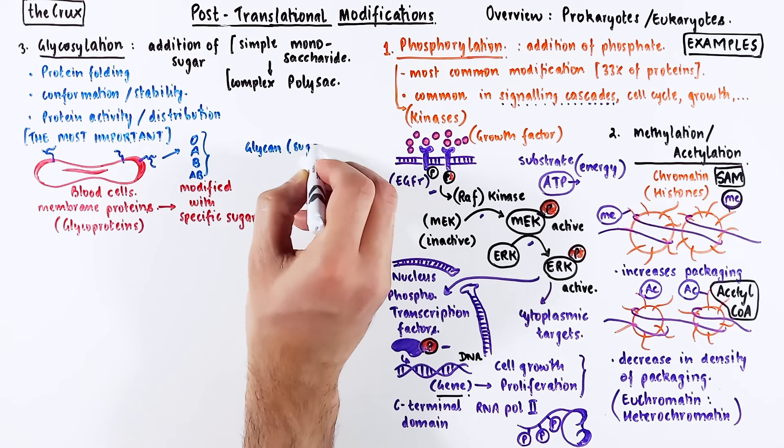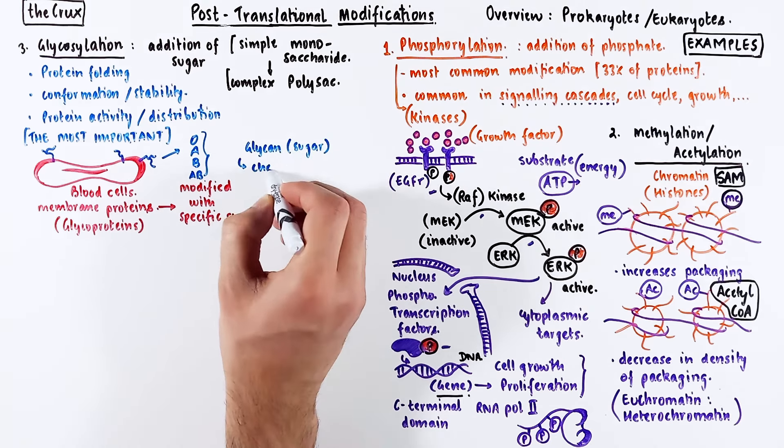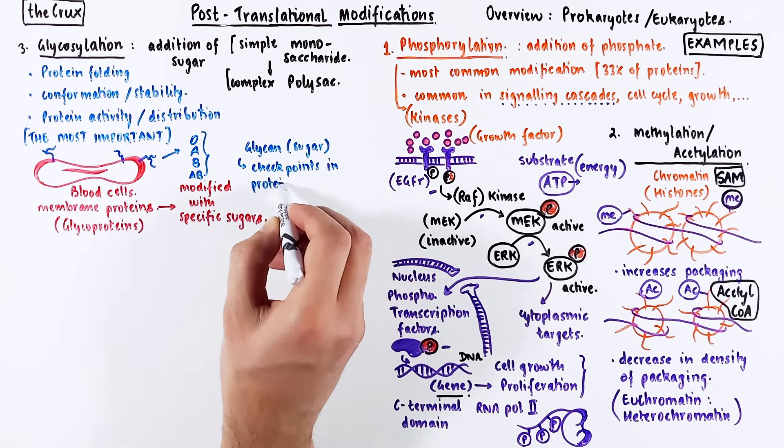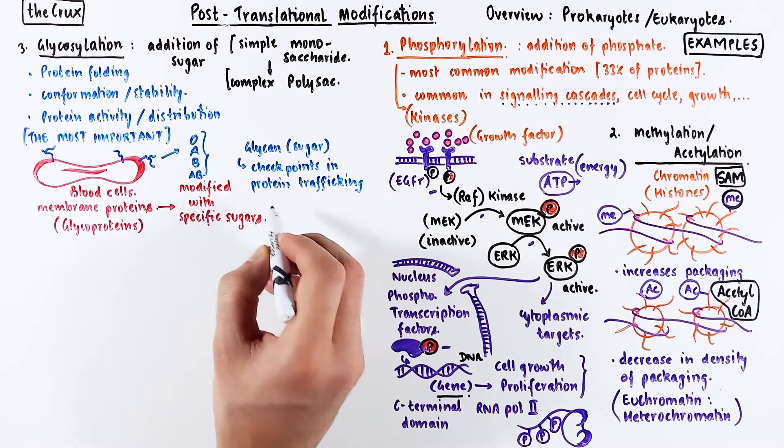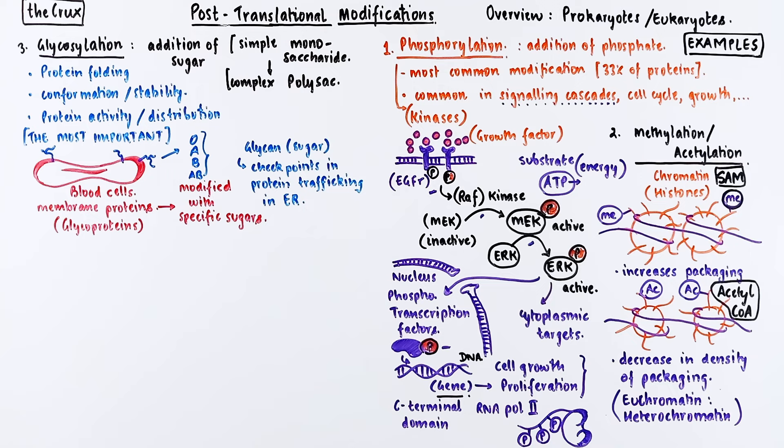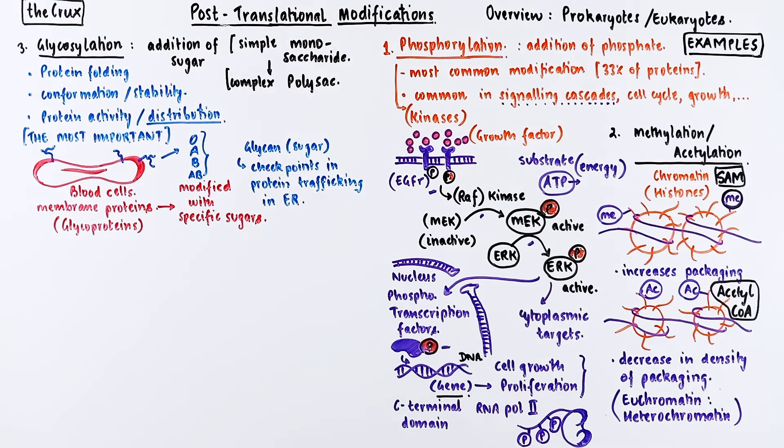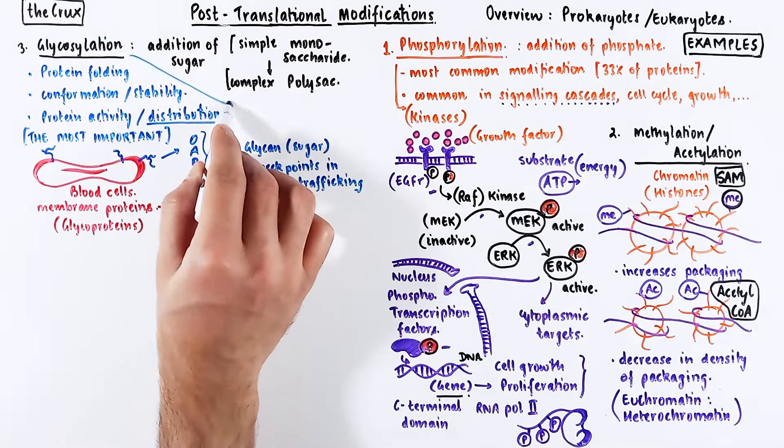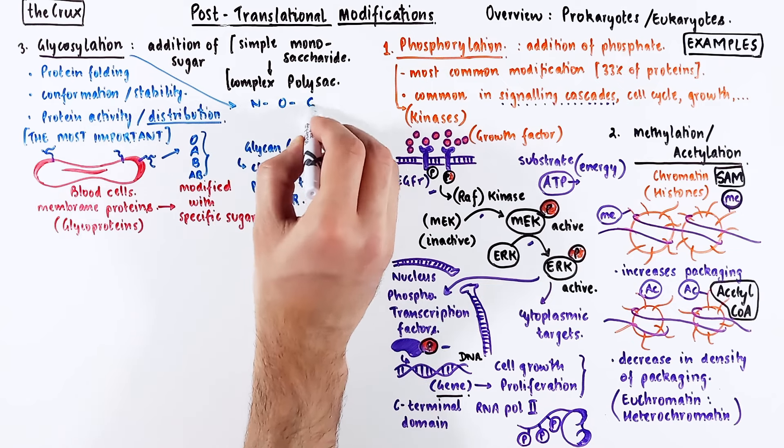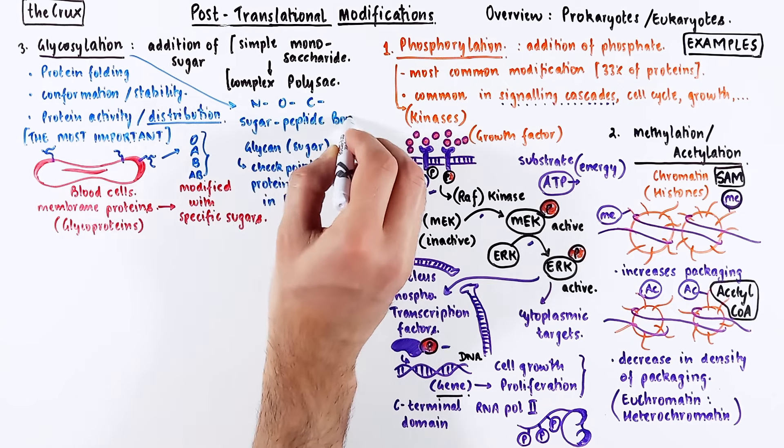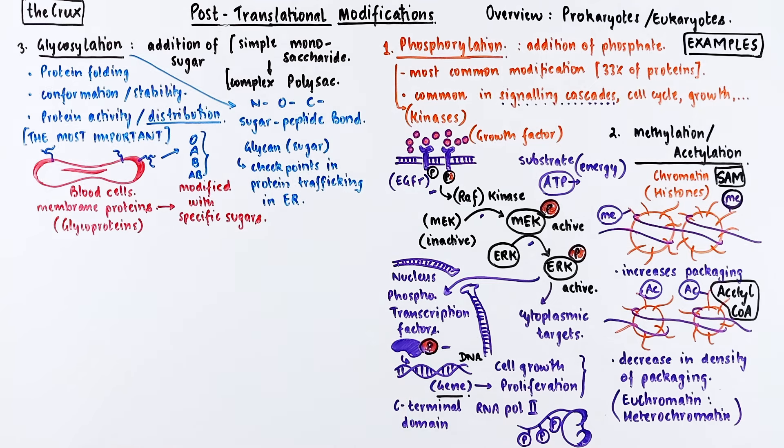Similarly, glycans, another type of complex sugar, act as a checkpoint in protein trafficking in the endoplasmic reticulum and control the distribution of specific proteins. If you read more on glycosylation, you'll find it's subdivided into N, O, and C-linked glycosylation, nomenclature based on the sugar-peptide bond.